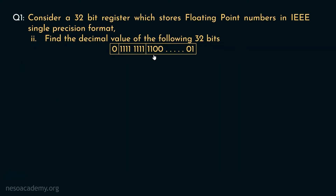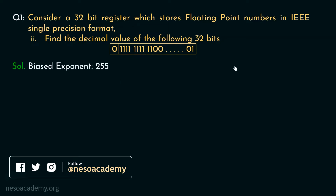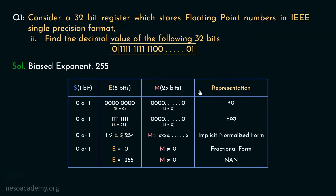For the second 32-bit pattern, observe the exponent part carefully — all 8 bits are 1s, meaning the biased exponent is 255. We already discussed that all 0s and all 1s in the exponent are special patterns. Since the exponent is all 1s and the mantissa is not all 0s, this satisfies the condition E equals 255 and mantissa not equal to 0, which represents Not a Number (NaN).